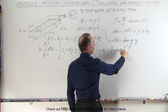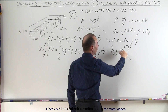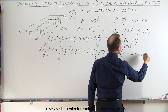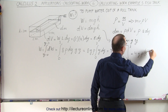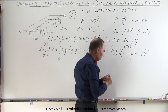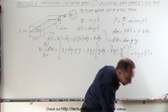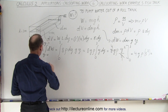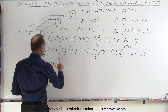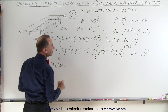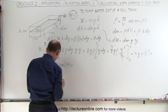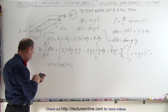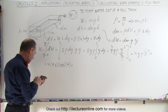Plugging in the upper limit gives three squared, which is nine; the lower limit gives zero. So this becomes 4gρ times three squared. Plugging in values: four times 9.8 times one thousand kilograms per cubic meter times nine. Four times 9.8 times 1,000 times nine equals a total work of 352,800 joules.